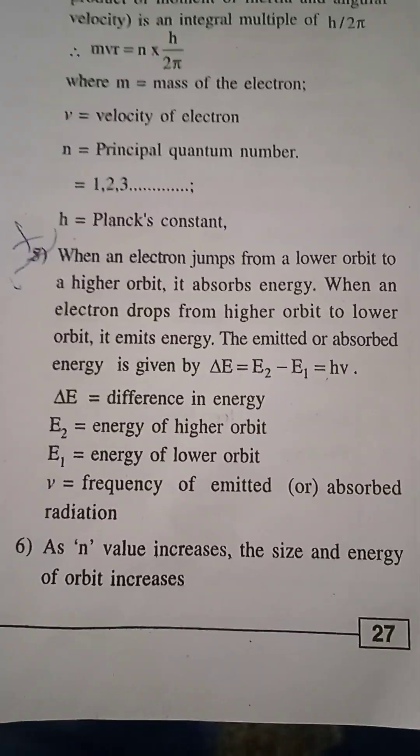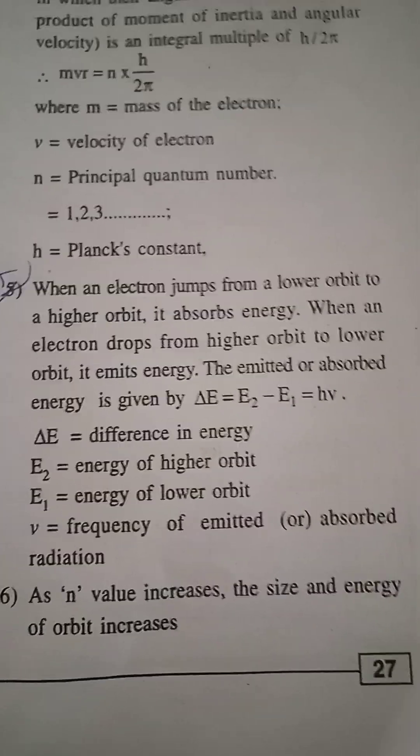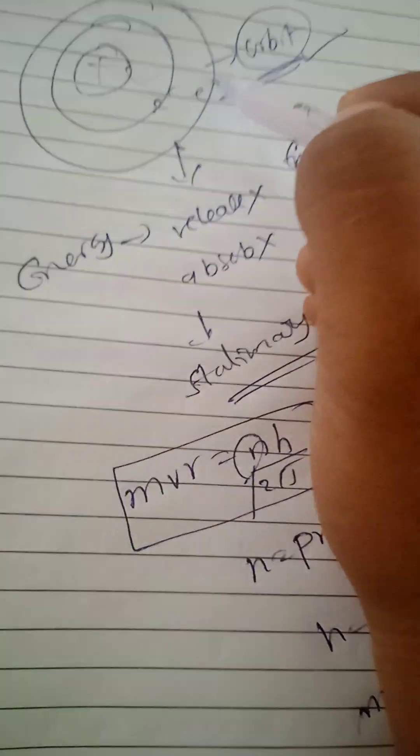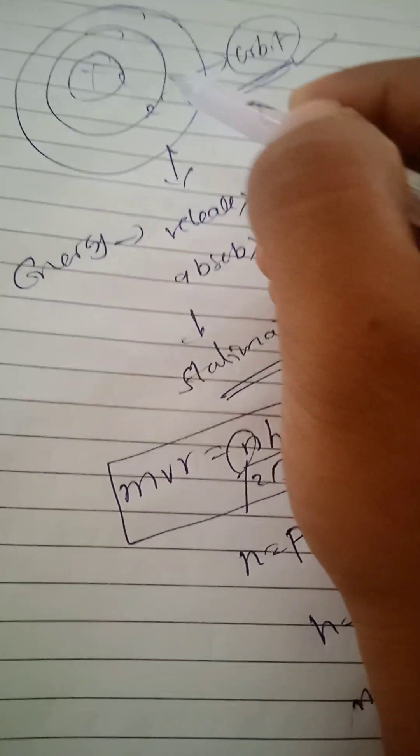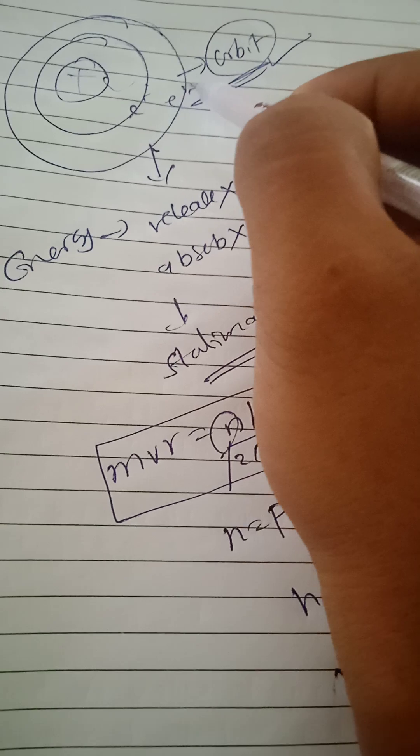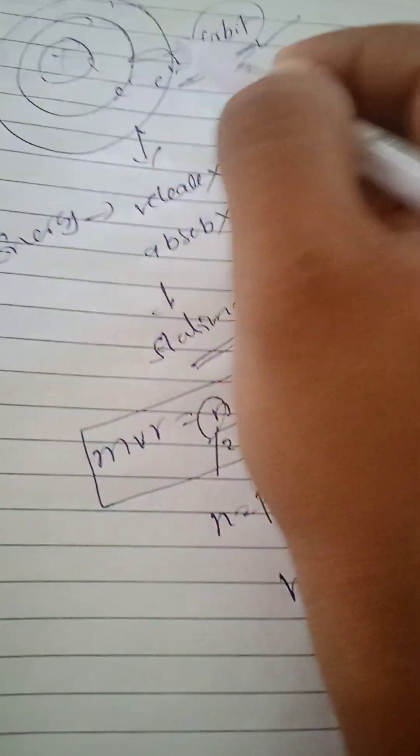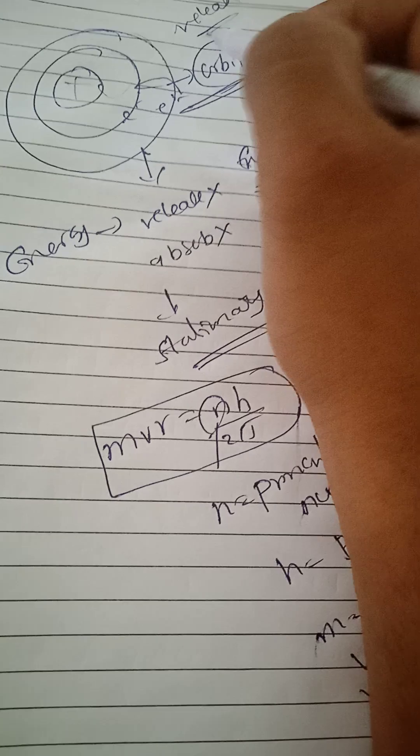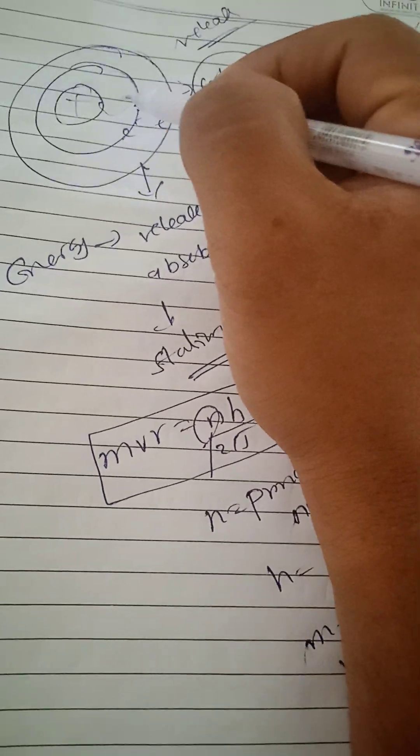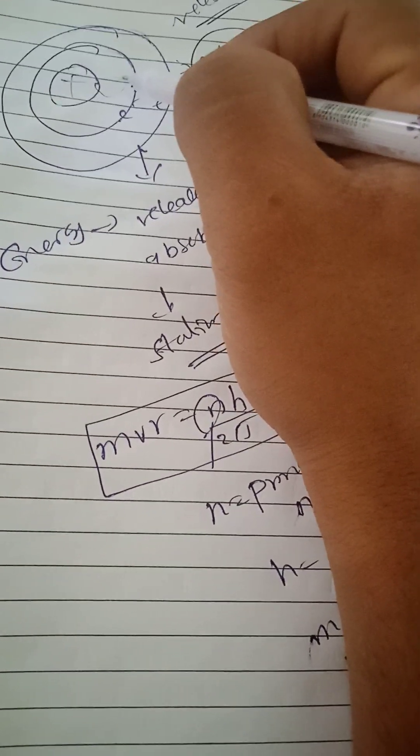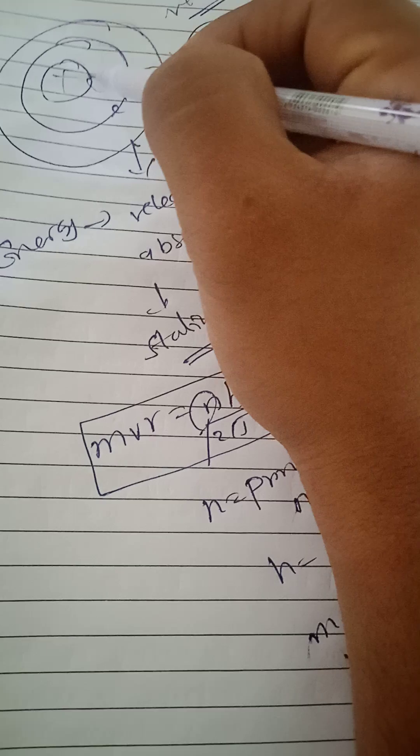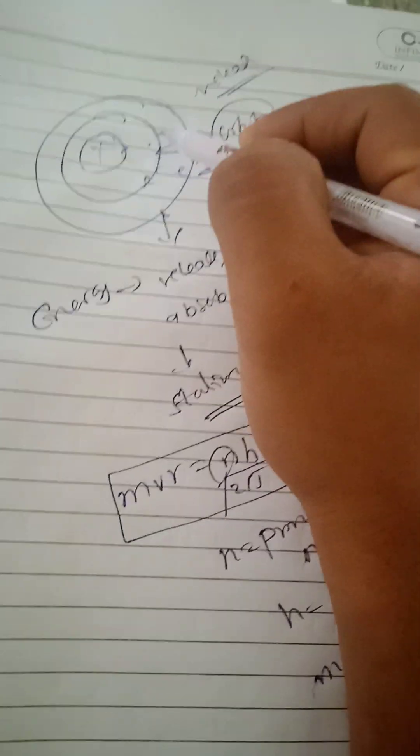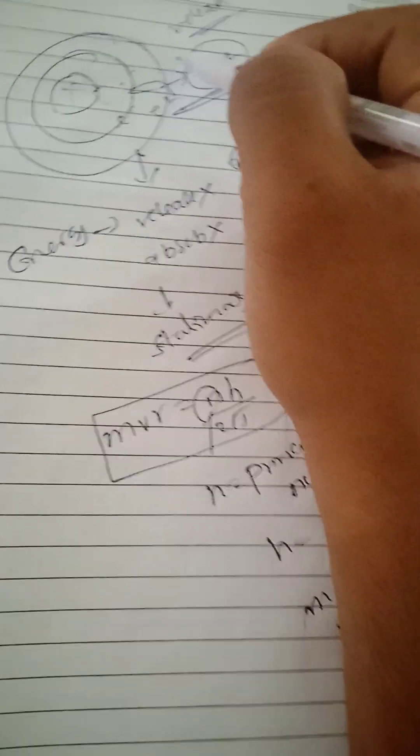When the electron jumps from lower orbit to higher orbit, it absorbs energy.